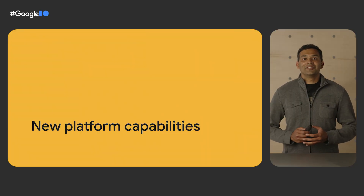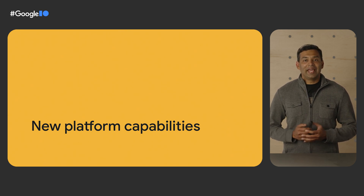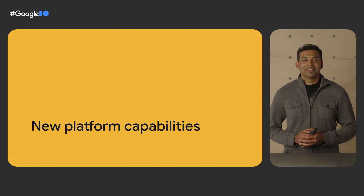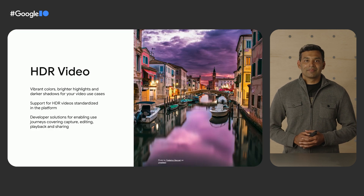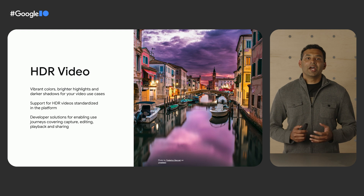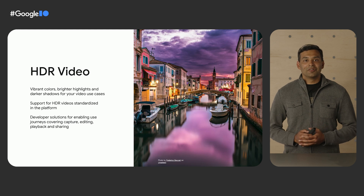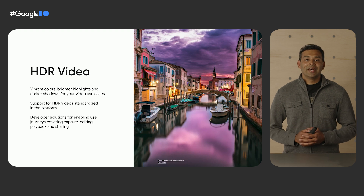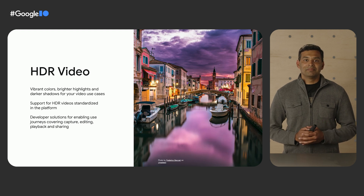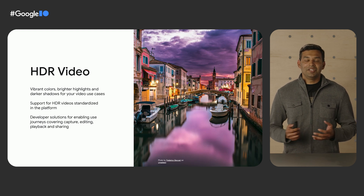Let's kick things off by introducing new platform capabilities coming to Android 13. In Android 13, we wanted to focus on elevating the media experience for our users by enabling OEMs to deliver premium features like HDR video and spatial audio. HDR provides a richer video experience by allowing for more vibrant colors, brighter highlights, and darker shadows. Android already has support for some HDR use cases like playback, and Android OEMs have flagship devices that can support HDR capture. But this capture support is typically available only to the native camera app, and the lack of support in the platform for use cases like editing has made it difficult for app developers to use this feature.